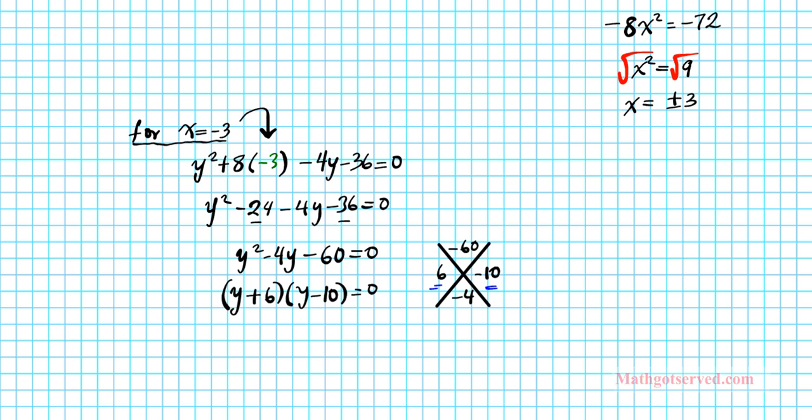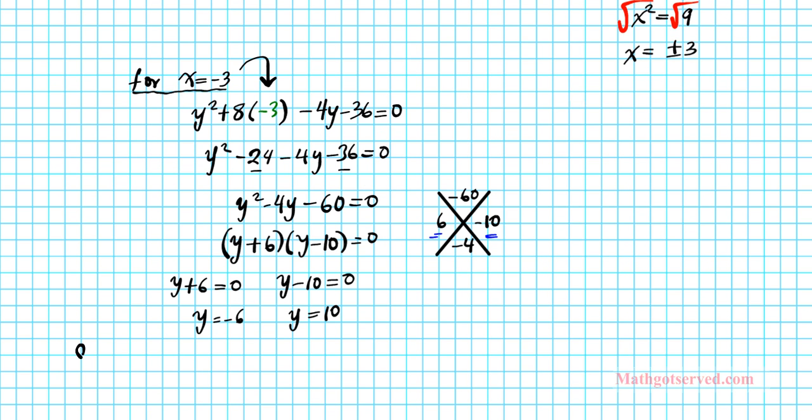So using the zero product property, we have y + 6 = 0 and y - 10 = 0. If you solve the first one, you get -6. If you solve the second one, you get 10. So the first solution that we have are going to be -3. If we remember x was -3, when x was -3, we had two y values, namely -6 for the first one and then 10 for the second one. So these two points are the solutions to the first pair of intersections.